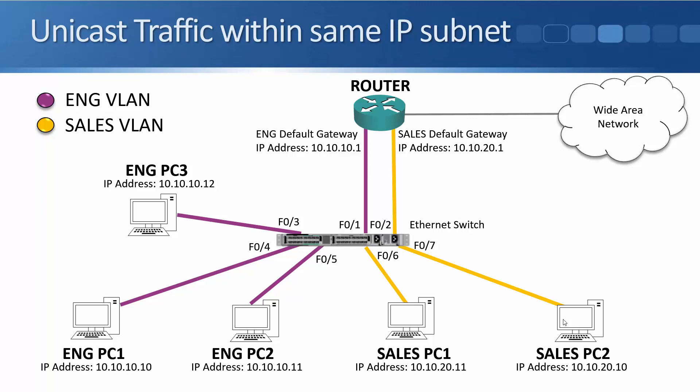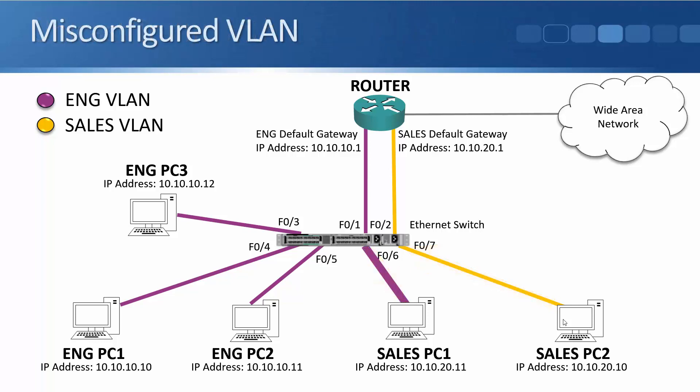Whenever unicast traffic is sent within the same IP subnet — for example, from salesPC2 to salesPC1 — the traffic comes into the switch and, since the switch already knows the MAC address of salesPC1, it sends it out that one port. If we misconfigure our VLANs and accidentally put salesPC1 in the engineering VLAN instead of the sales VLAN, then no sales PCs will be able to talk to it. For instance, if salesPC2 sends traffic to destination IP 10.10.20.11, the switch does not forward traffic between different VLANs — that would have to go via a router — so the traffic won't reach salesPC1.